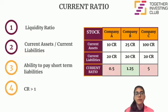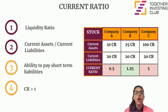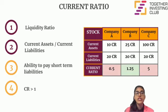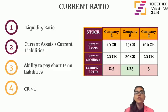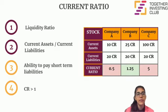Generally, the acceptable ratio is a number slightly higher than or equal to one. However, if the ratio is too high, it might indicate that the company is not using its assets very efficiently.